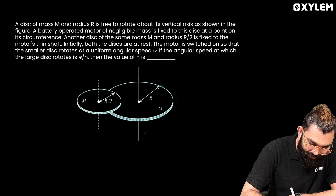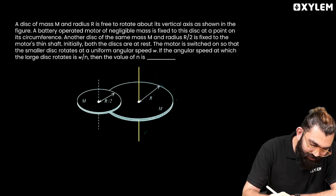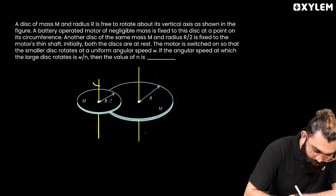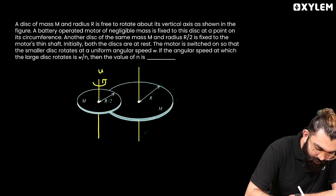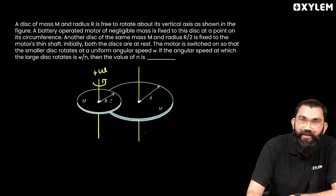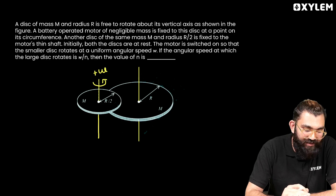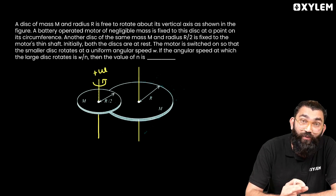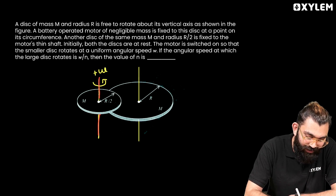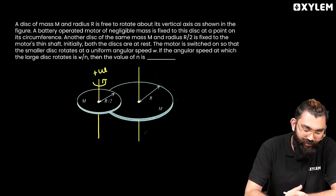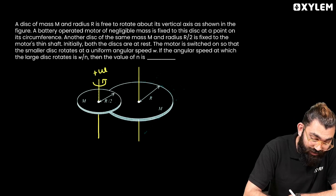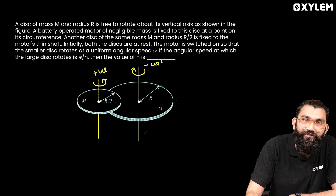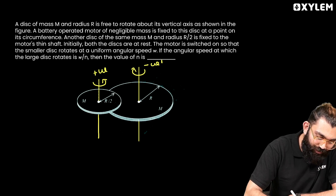We apply conservation of angular momentum about the axis passing through the center of the larger disc, perpendicular to the plane of the disc. When the motor is switched on, the smaller disc starts to rotate in a particular sense with angular speed omega — let us consider this direction as positive. At the same time, the larger disc starts to rotate in the opposite sense, with angular velocity minus omega dash, so that the final angular momentum remains zero.